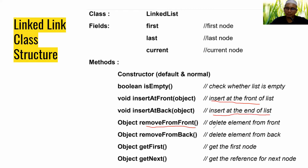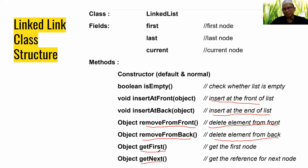InsertAtBack inserts new data at the end of the list. RemoveFromFront deletes an element from the front. RemoveFromBack deletes an element from the back. GetFirst and getNext are both used to access nodes in the list — getFirst retrieves the first node and getNext retrieves the next node.